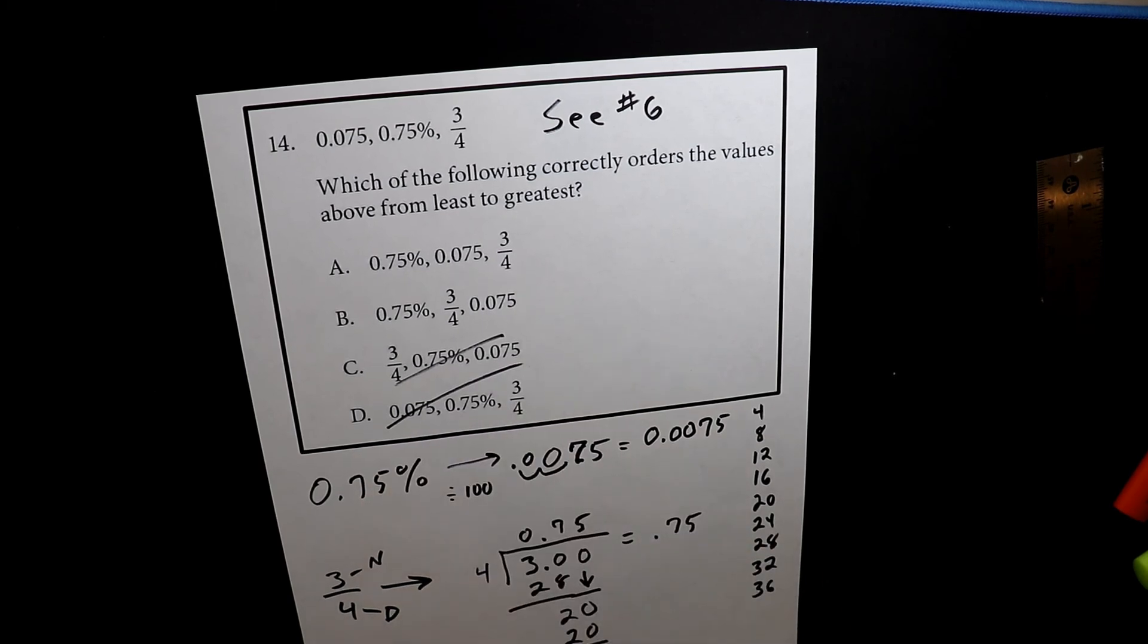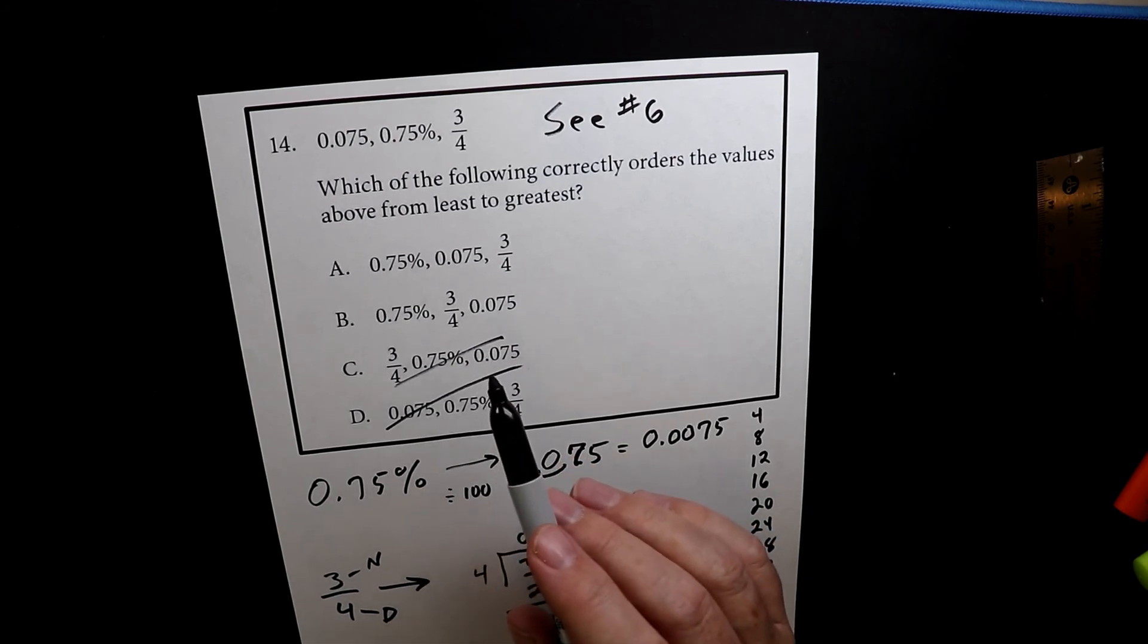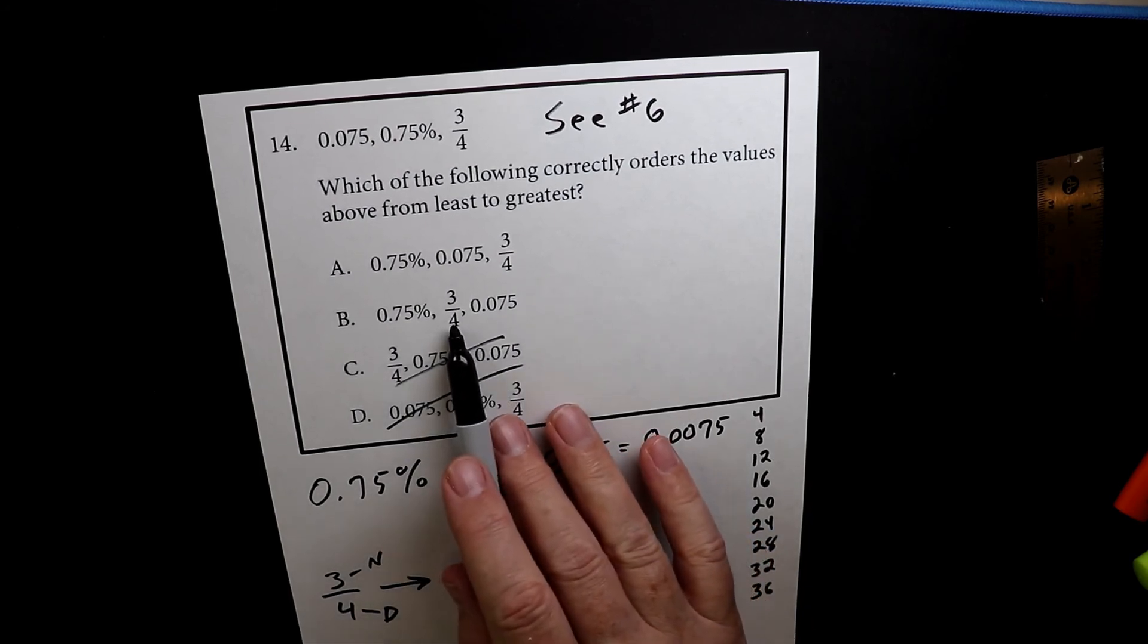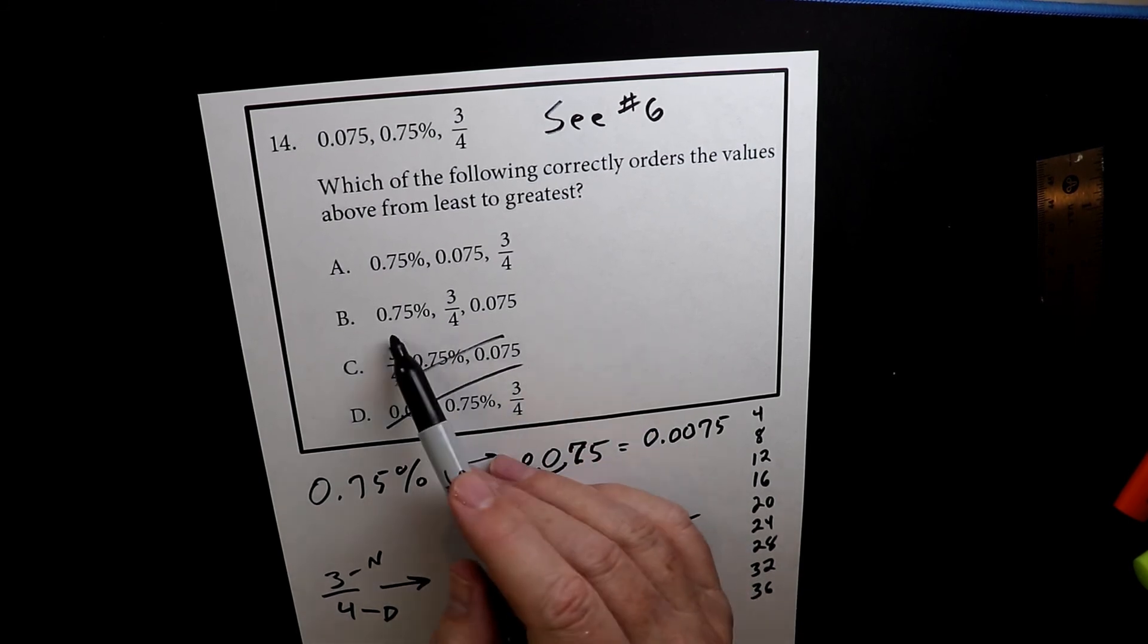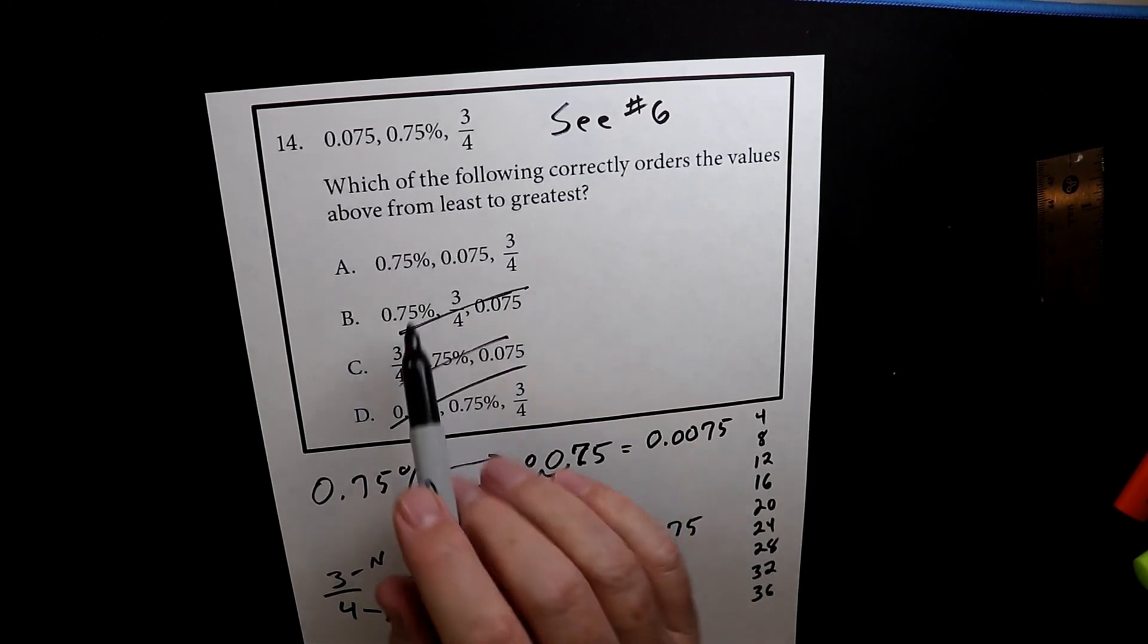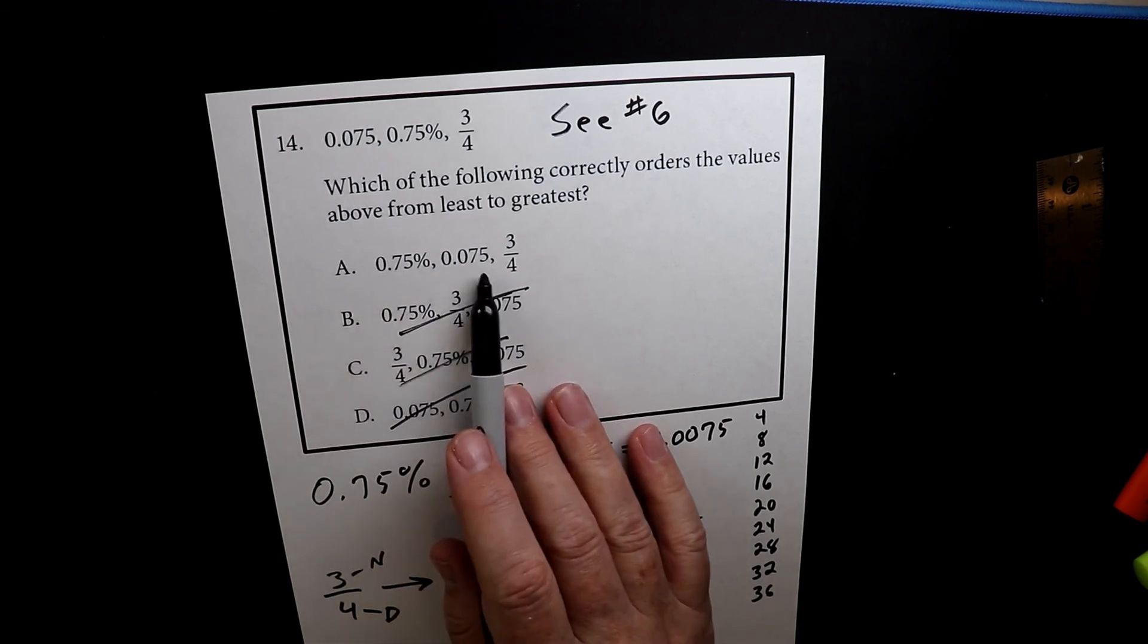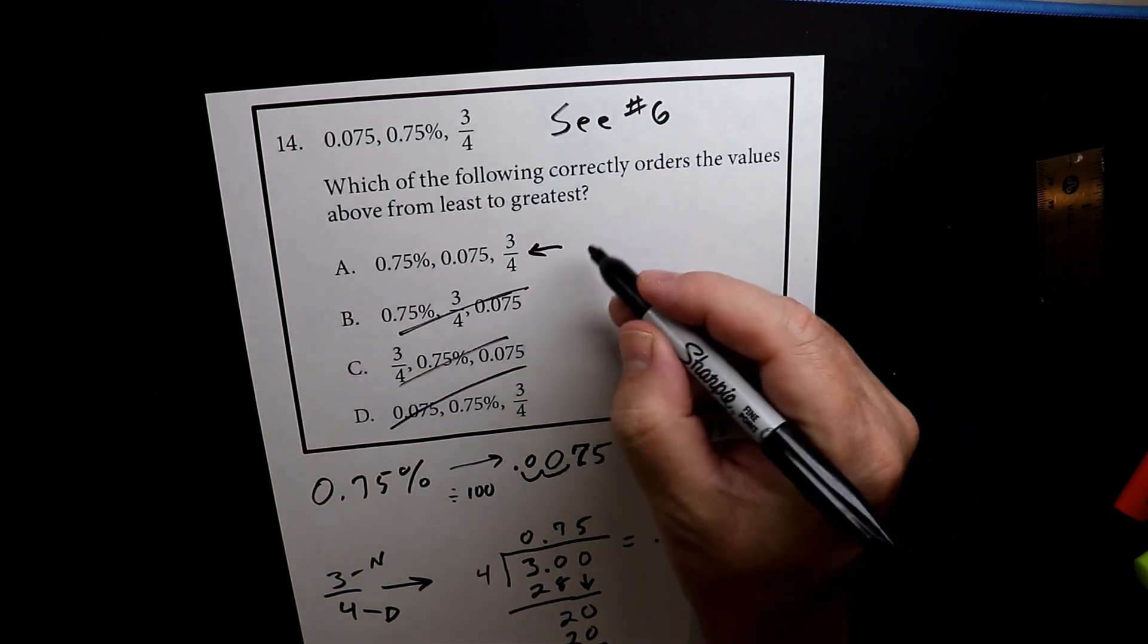We're not considering those two now. So the next thing I do is look to see which is the next smallest. Now we already realized that this one's the biggest because that's 0.75. So that one's out. So that means that this has to be the next one. And this is the right answer.